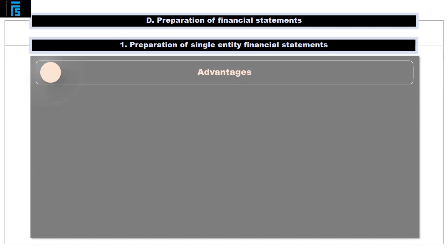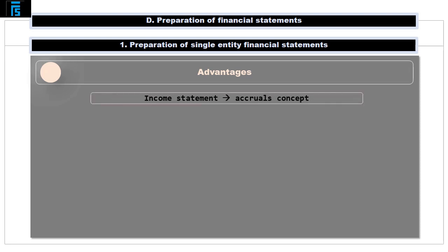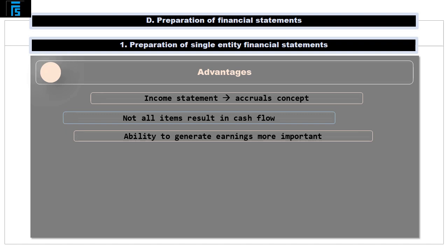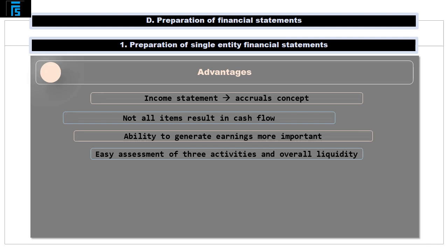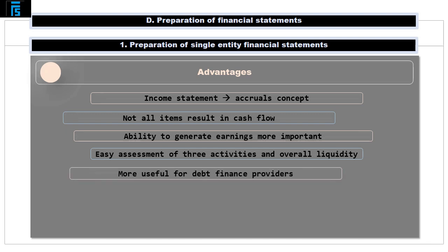Let us now consider the advantages which the statement of cash flows presents, especially when compared to the income statement. The income statement is prepared under the accruals concept, which calls for the presentation of income and expenses in the periods to which they relate, as opposed to when the underlying cash flows occur. Moreover, some items of income or expenses are not associated with a cash inflow or outflow at all. For many users of financial statements, a company's ability to generate earnings is less important than its potential to generate cash flows. This will in particular be true for providers of debt financing, whose primary concern is a borrower's ability to make timely repayments of interest and principal, which has little in common with income generation.